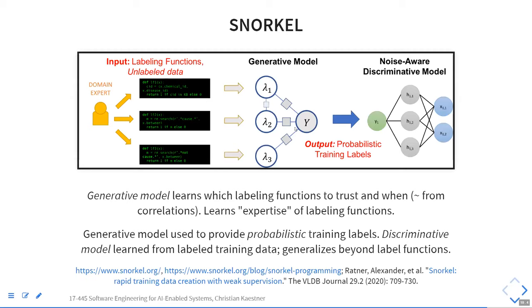You build a model — called the generative model in the Snorkel approach — that looks at how well those labeling functions correlate. If functions frequently correlate, you assume they're fairly reliable and give them high priority. If they often contradict each other, they might be less reliable, or more reliable on certain kinds of data than others. You guess reliability from correlations, and together this creates a combined labeling function that weighs all the individual labeling functions so that you can label training data.